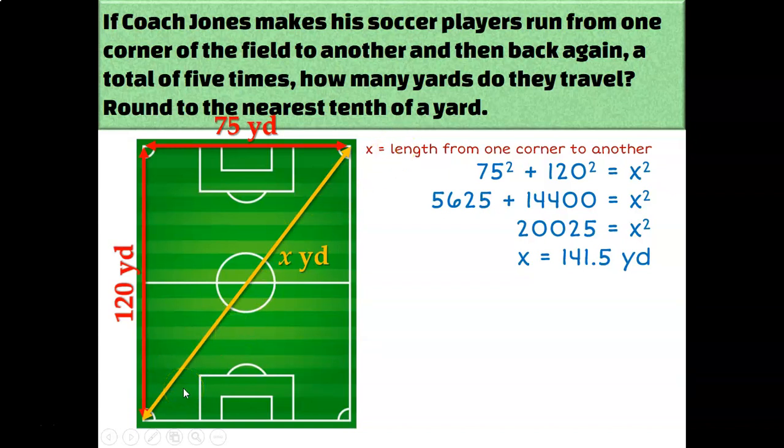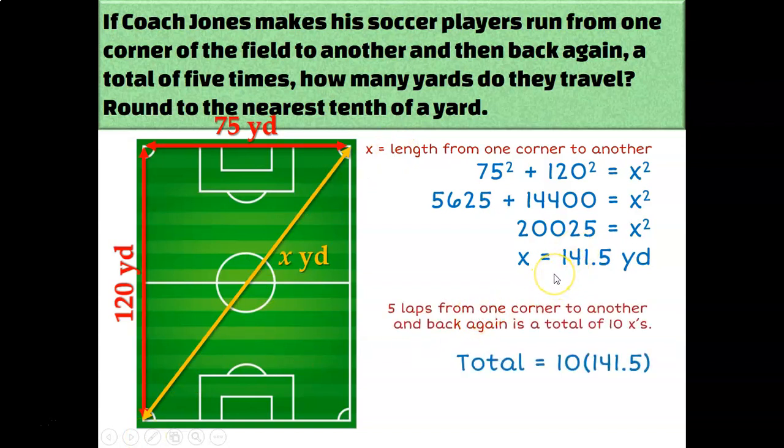One, two, that's one lap. Three, four, that's two laps, and so on. So I need to multiply this number by 10. So these players are running approximately 1415 yards when Coach Jones makes them run these laps.